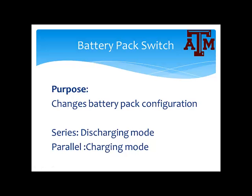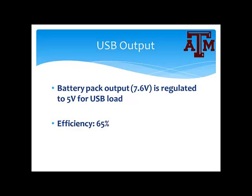The purpose of the battery pack switch is to change battery pack configuration. When the batteries are in series, they are in discharging mode. When they are in parallel, it's in charging mode. The battery pack output is regulated to 5V for USB load, and the regulation circuit reaches an efficiency of 65%.